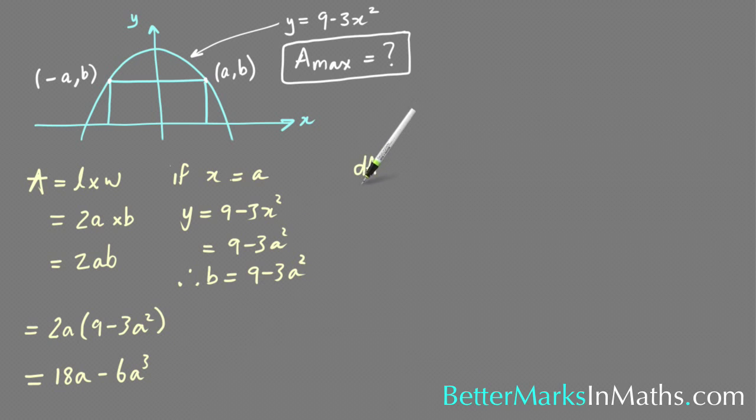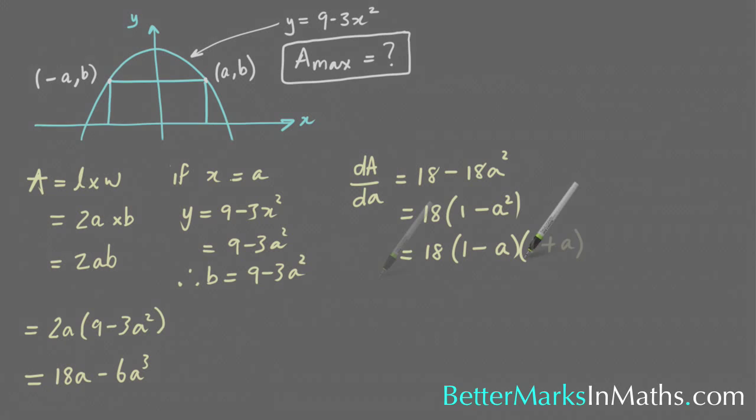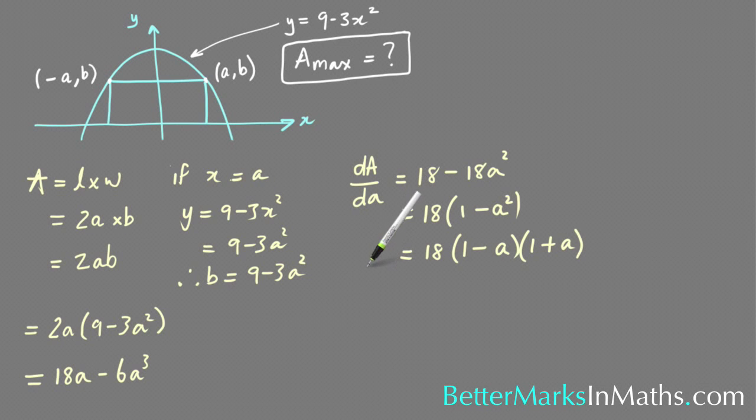From there, find the derivative. So dA/da is equal to—deriving that you get 18, and then minus, bringing down the power, 3 times 6 is 18, and then reduce the power by 1 so you get 18a squared. Then I'm going to take out a common factor and factorize this: 18(1 minus a)(1 plus a).